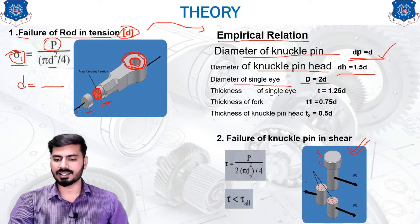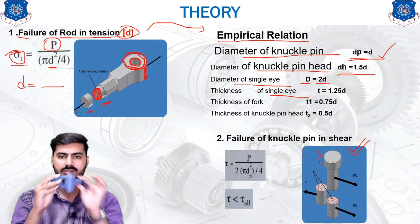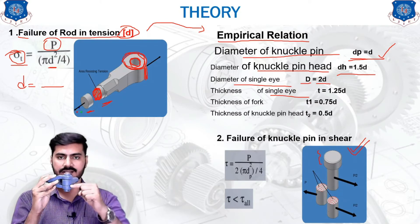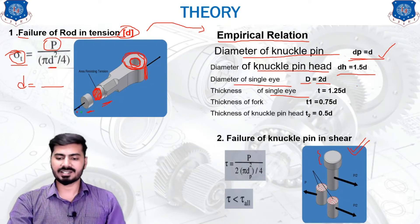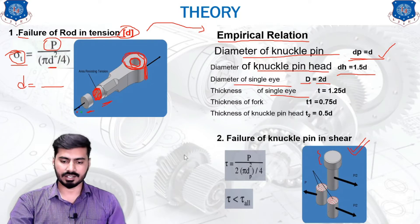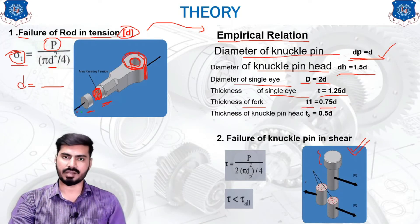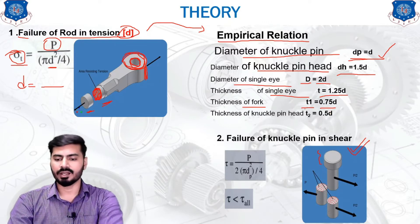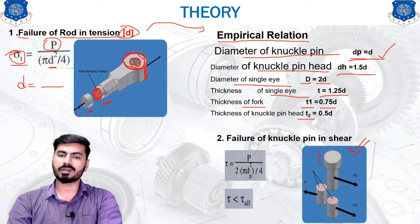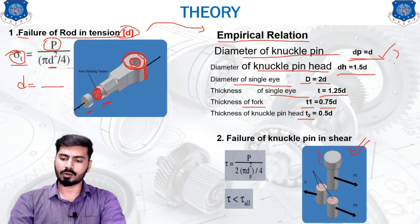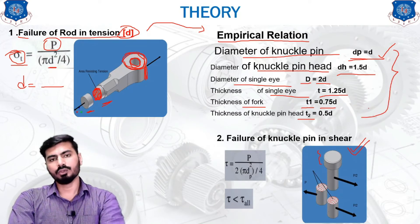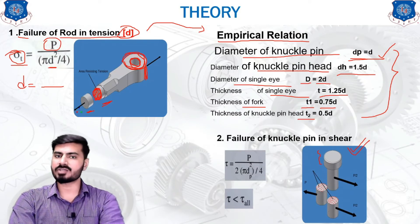The thickness of the single eye — this vertical thickness — is represented by t, and t equals 1.25 times d. The thickness of the fork or double eye is given by t1, where t1 equals 0.75 times d. The thickness of the knuckle pin head is given as t2, where t2 equals 0.5 times d. You do not have to find out how those equations were derived; you just need to remember them in order to calculate the rest of the dimensions of the knuckle joint.